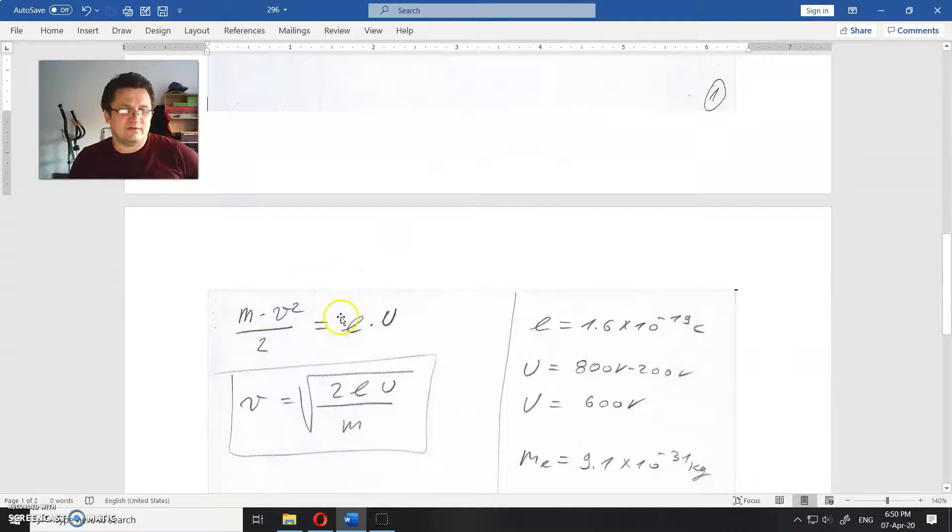So from this equation, V is equal to the square root of 2 times E times U divided by M. And E is the proton charge or the charge of the electron. It's the same thing in absolute units.